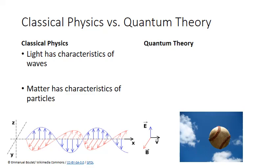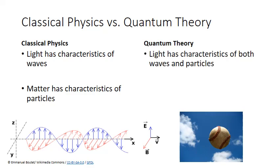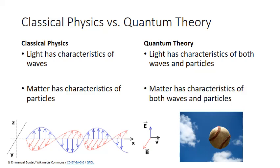In the early 1900s, Einstein proved that light actually can also behave in a particle-like fashion. Then German scientists in the mid-century proved that electrons, as microscopic matter, can also behave in a wave-like manner. This dual nature for both light and matter opened the door to a new model of the atom that could explain a variety of properties and phenomena that couldn't be explained by older models. To begin our understanding, let's start by examining light first.